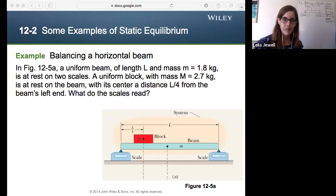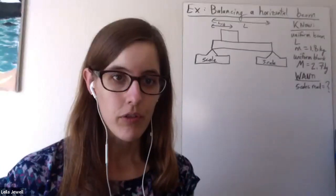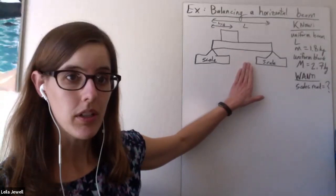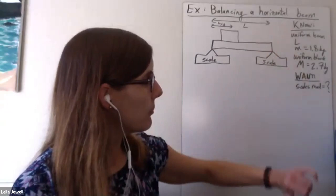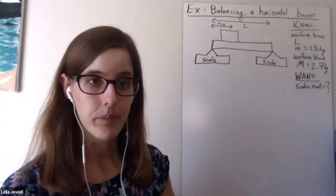Okay, so I went ahead and jotted down what I observed from this problem. I started by drawing the picture, which we're going to interact more with in just a moment. I also wrote down what we know. Uniform beam of length L, mass little m, uniform block, mass big M, and what we want is what the scales read.